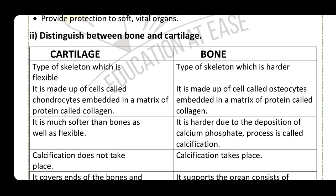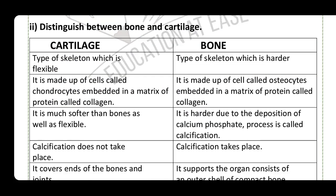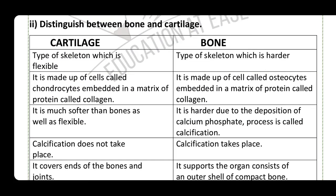Question: distinguish between bone and cartilage. Cartilage is a type of skeleton which is flexible, but bone is a harder type of skeleton.